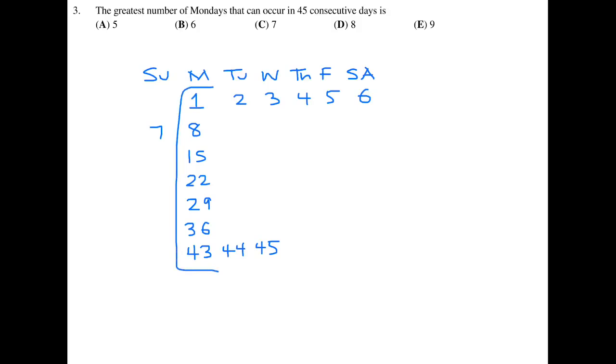The greatest number of Mondays that can occur in 45 consecutive days is. Let's draw a little calendar and start with the very first day being a Monday. We just keep counting 1, 2, 3, 4, 5, 6, 7, 8. The 8th day will be a Monday also. Similarly every 7th day will be a Monday: day 15, day 22, day 29, day 36, and day 43. Day 44 is a Tuesday and day 45 is a Wednesday. So this is the greatest number of Mondays we can create, which is 7 Mondays.